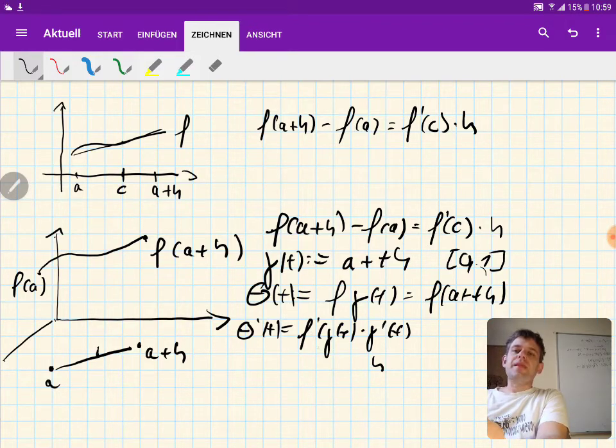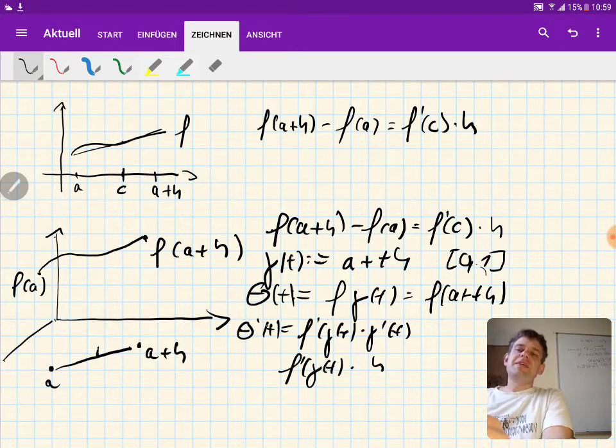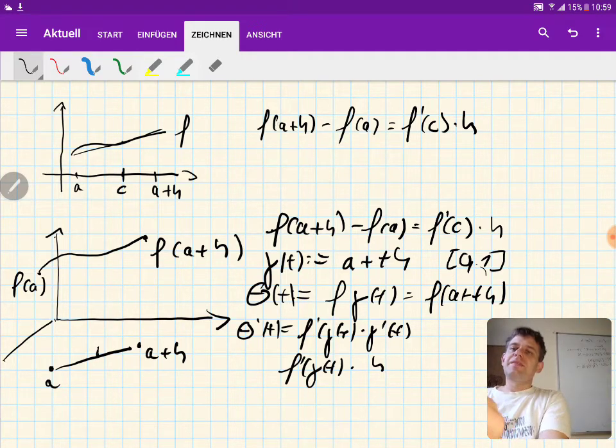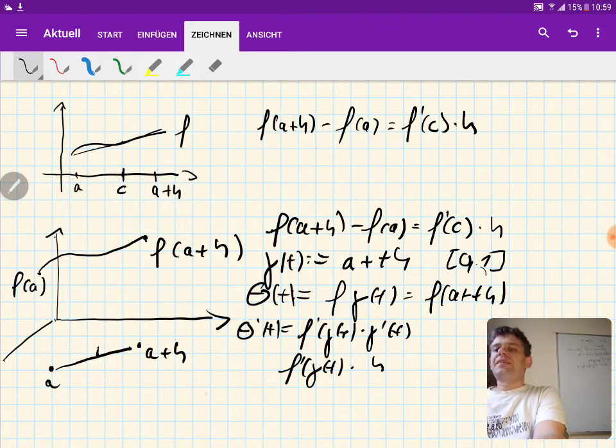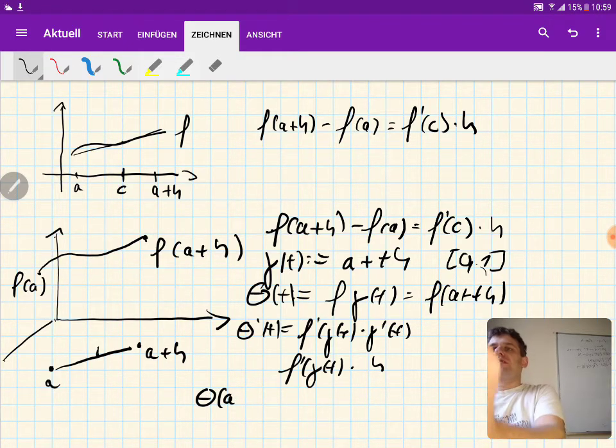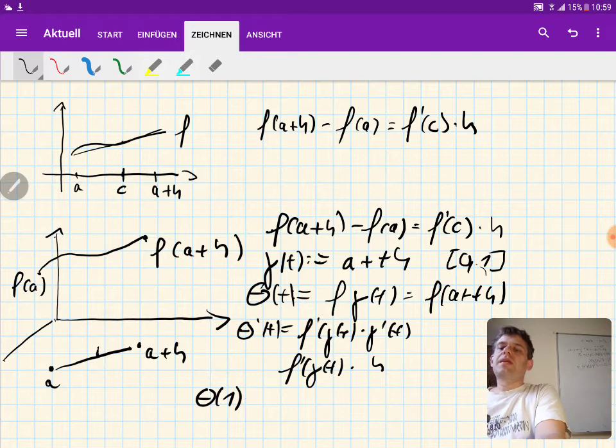So we have the derivative of f at gamma t times h. And since this function theta is a function from R to R, we can use the single variable version of the mean value theorem to conclude that theta of 1 minus theta of 0